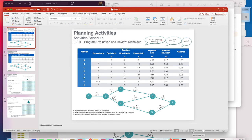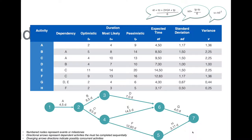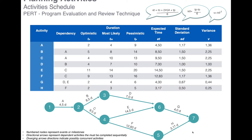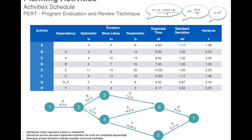We just saw a one-point technique, which is the critical path method. The critical path method is called a one-point technique because we work with only one possible duration for each specific activity. The program evaluation and review technique, the PERT method, is a three-point technique — because we work with three possible durations for each activity.